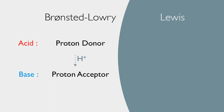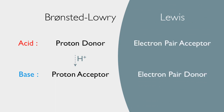In Lewis Theory, an acid is defined as an electron pair acceptor, while a base is an electron pair donor. So again, we have acids and bases defined in terms of passing something back and forth — in this case, an electron pair.